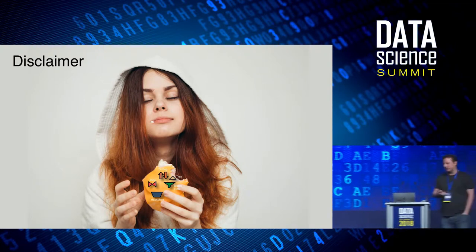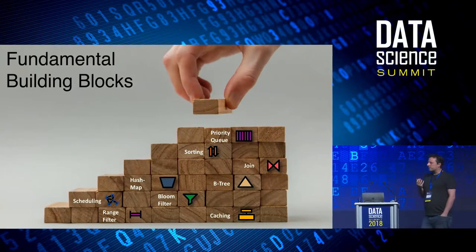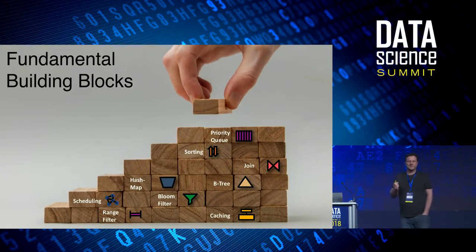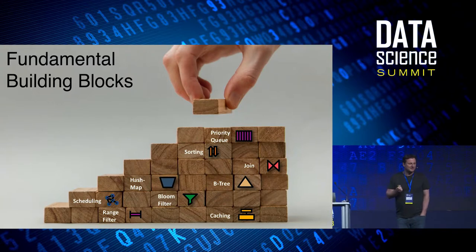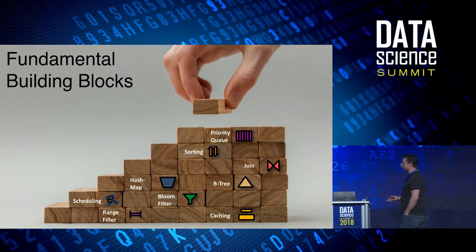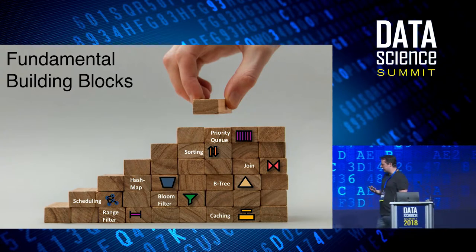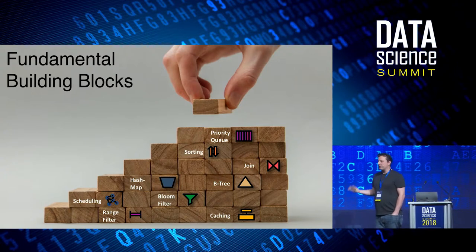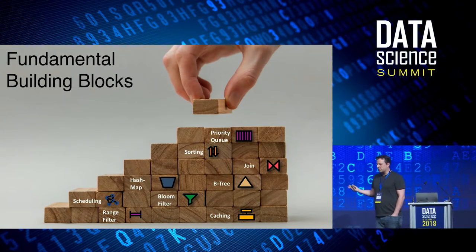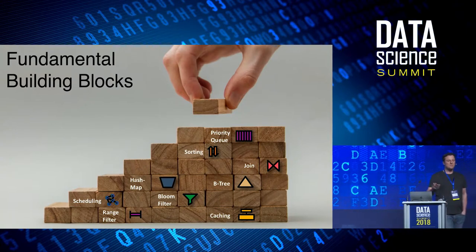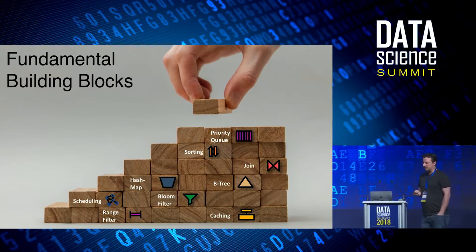So why were people so excited about it? Because algorithms and data structures are the fundamental building blocks of every application we have. This is what we learn in CS 101. How to sort something, how to build an efficient index structure to access the data. We have a whole bunch of them: priority queues, different join algorithms, B-trees, bloom filters, caching architectures, range filters. There are many different data structures and architectures.